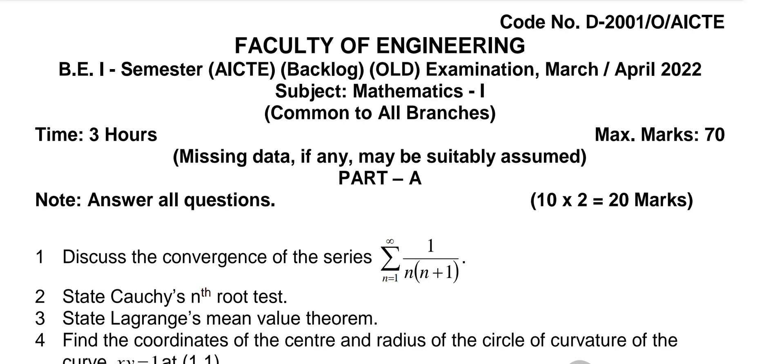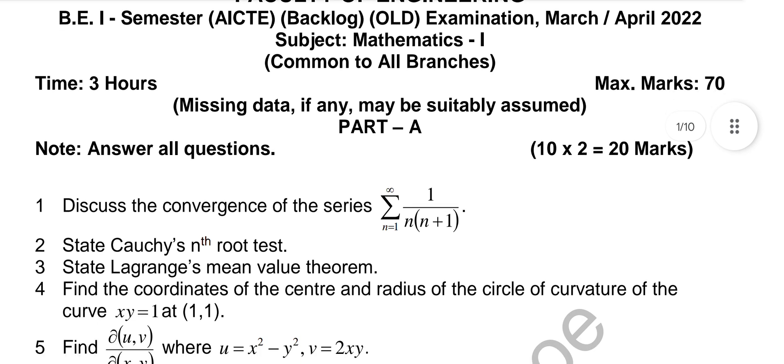Hello everyone, good morning, welcome to our online class. In this class we'll see Mathematics 1, Osmania University Mathematics 1 previous year question papers — these are 2022 previous year question papers. Old pattern: short answers, you have to write 10 and long answers you have to write 5. Ten 2s are 20 and ten 5s are 50, so 70 marks paper.